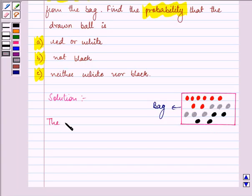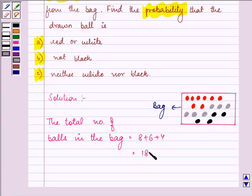So the total number of balls in the bag are 8 plus 6 plus 4, that is equal to 18 balls.